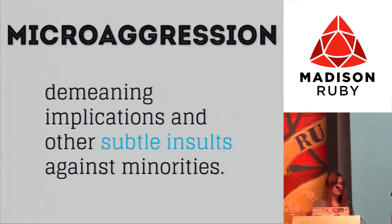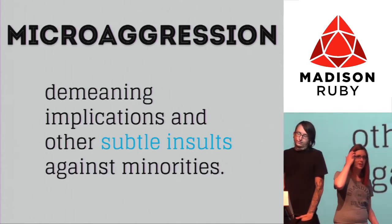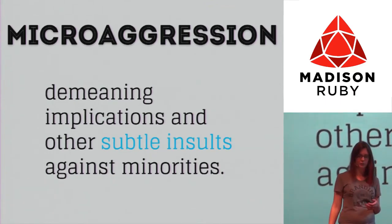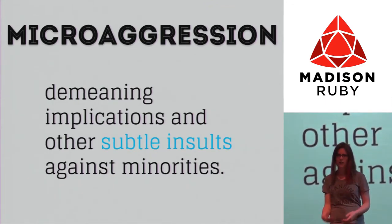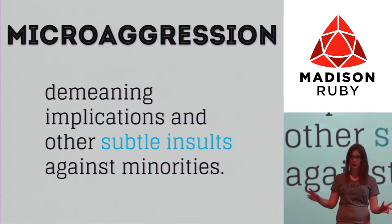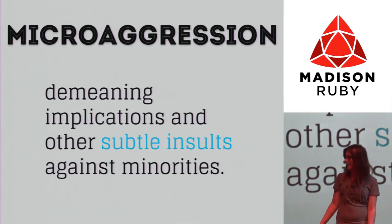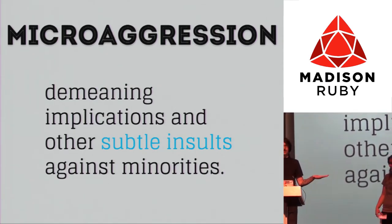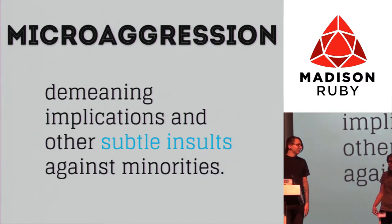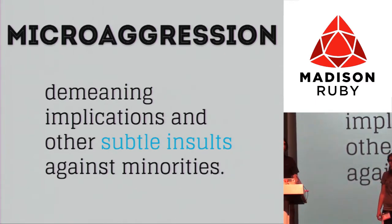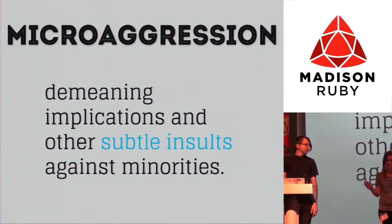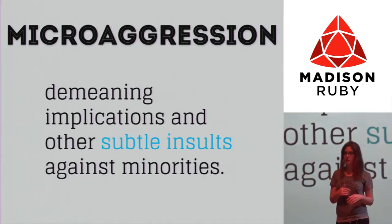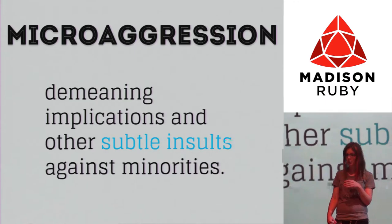Microaggressions are demeaning, subtle insults against minorities — that everyday reminder that you are a deviation from the norm. Examples include: 'doing dishes is woman's work,' or 'Obama is so articulate,' which is straight-up racism that people somehow don't recognize as such. Backhanded compliments are one of the most common forms. There is a website called microaggressions.com where you can see a huge listing of these — most of them have probably happened to a woman you know.